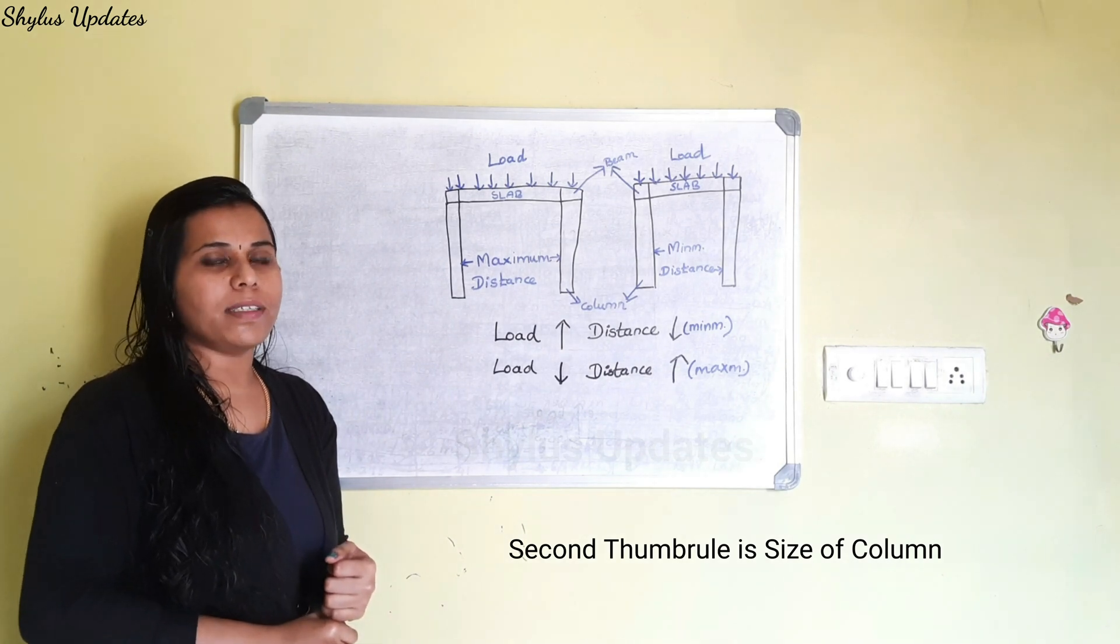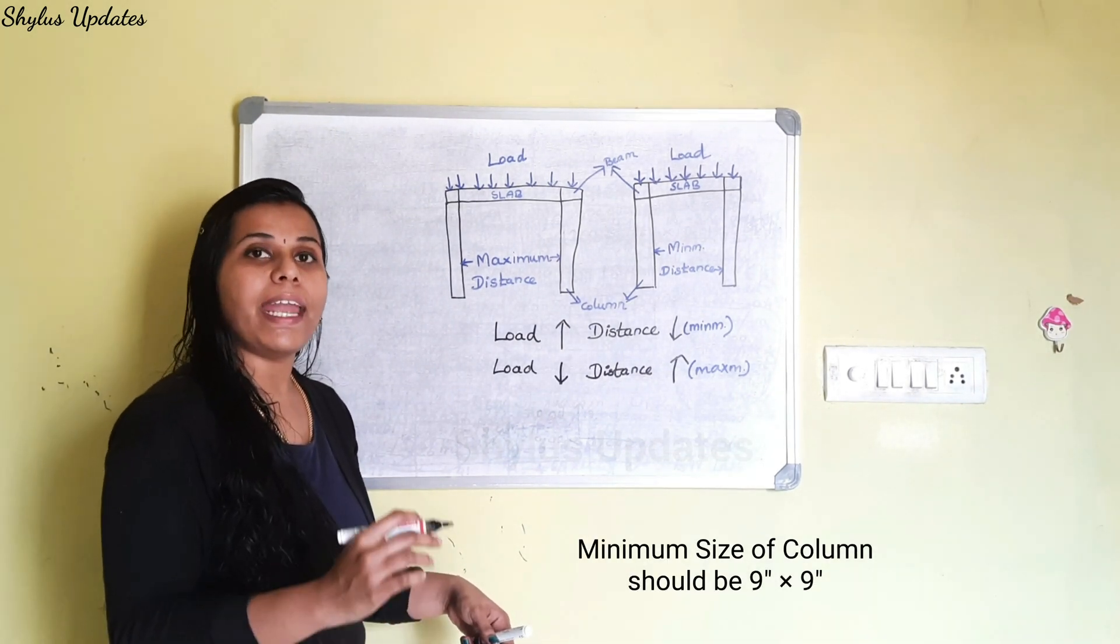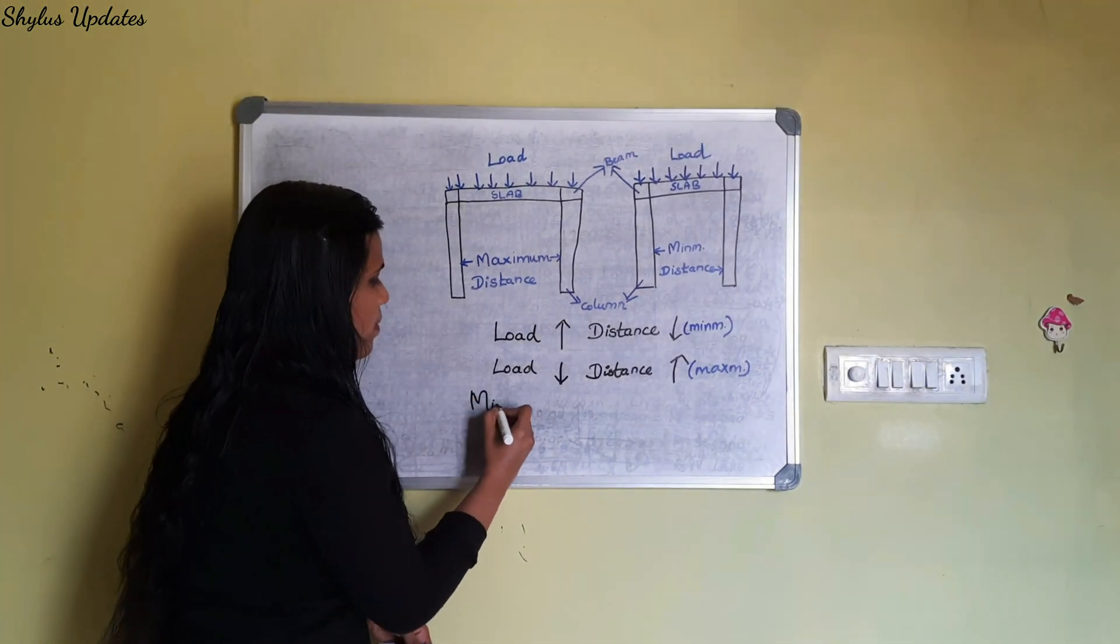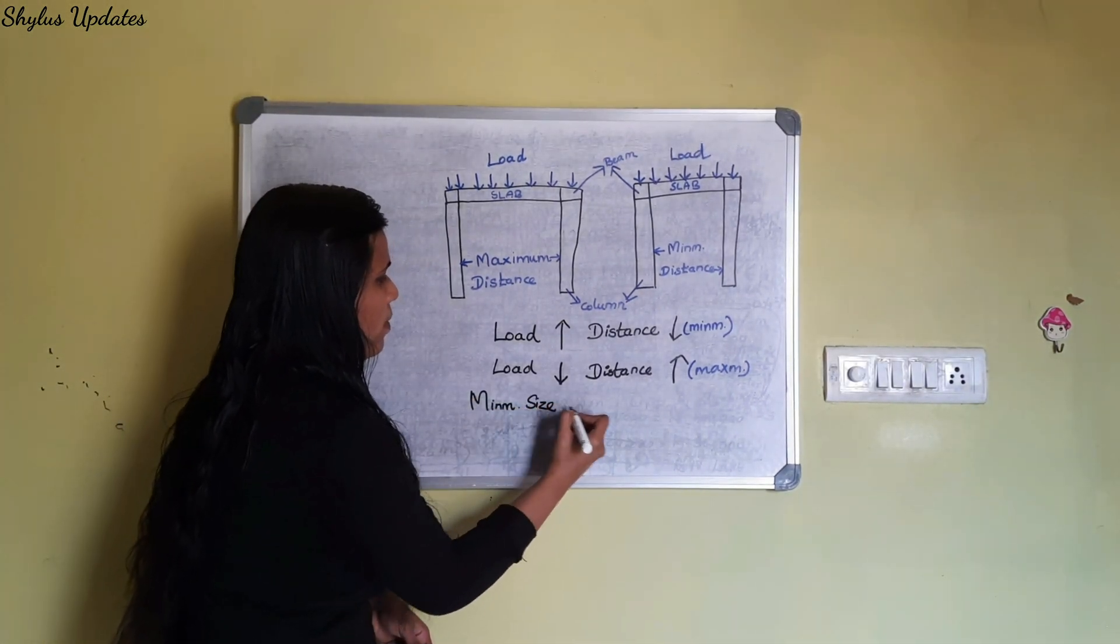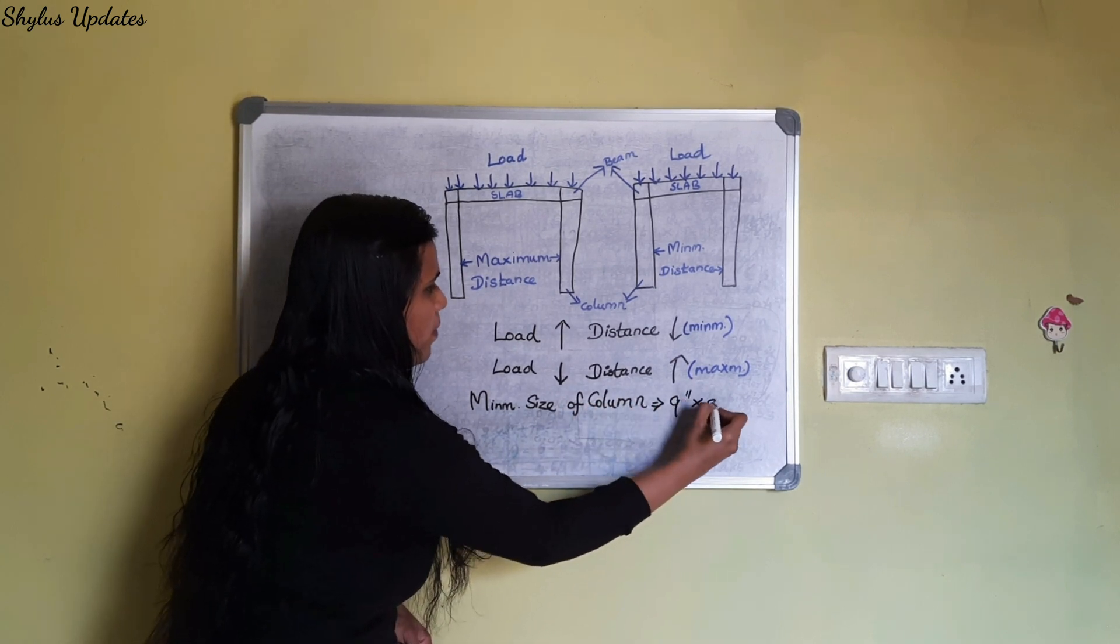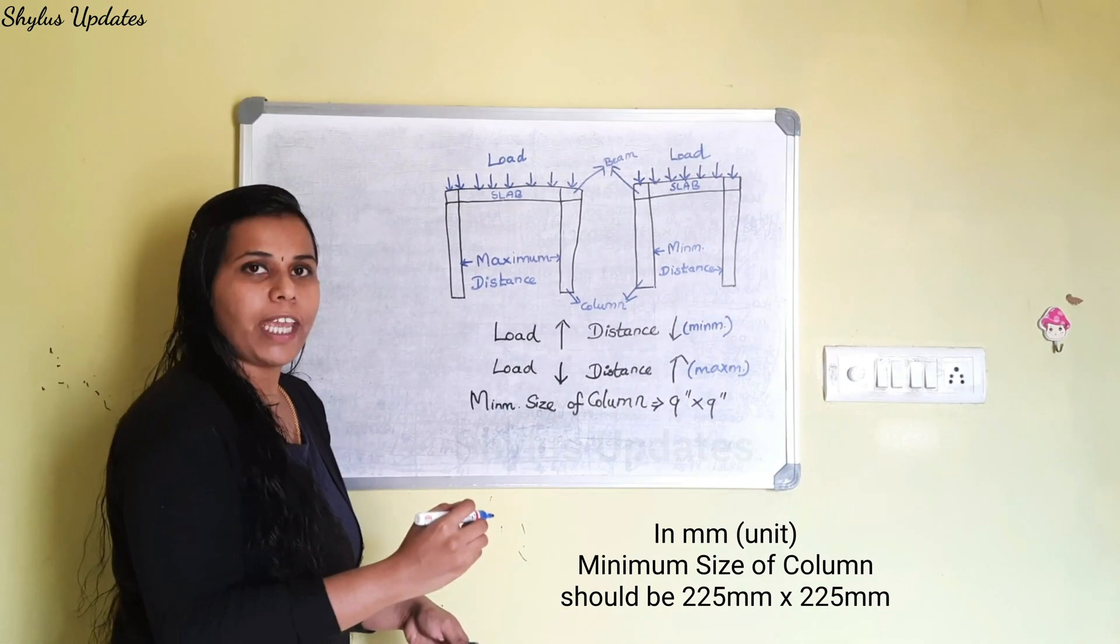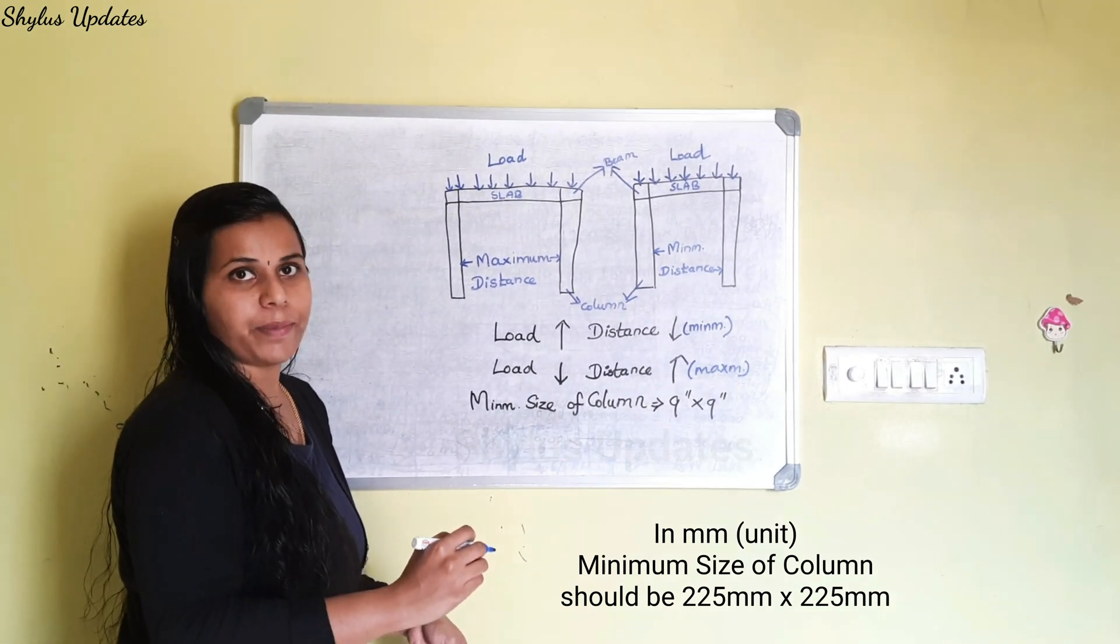Second thumb rule is size of column. Minimum size of column should be 9 inch into 9 inch. In mm, we can write it as 225 mm into 225 mm.